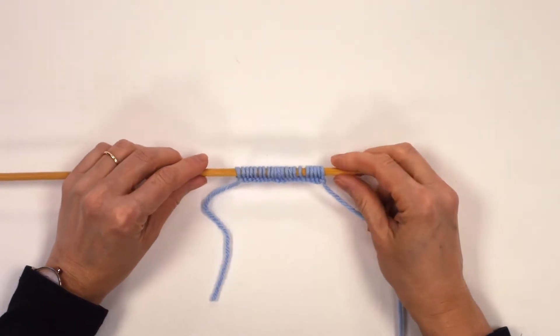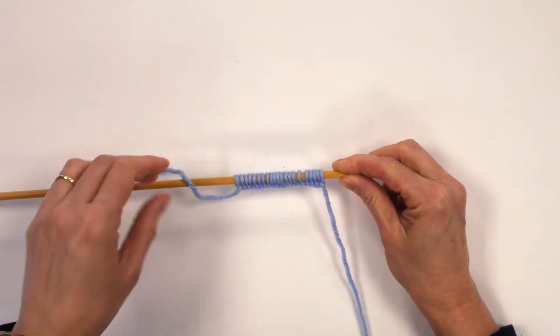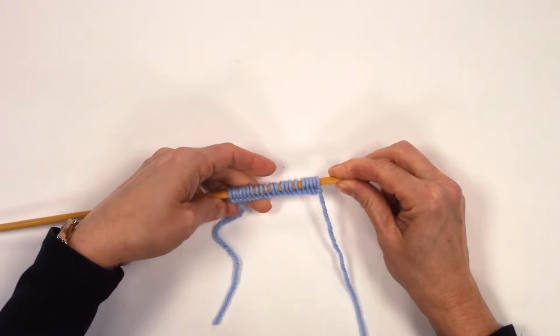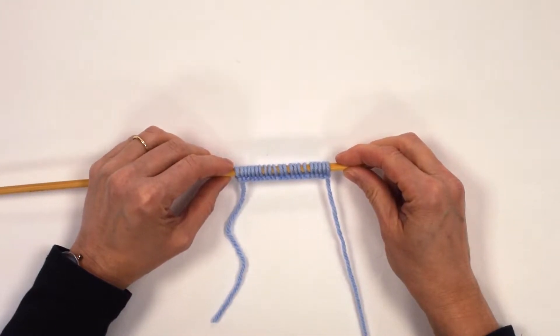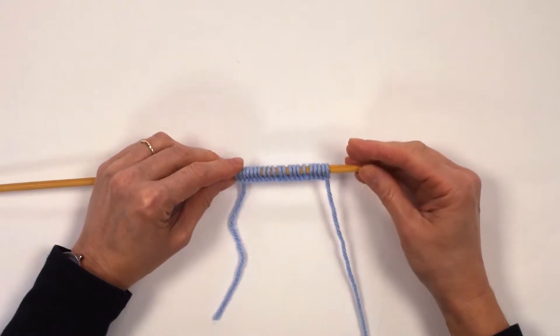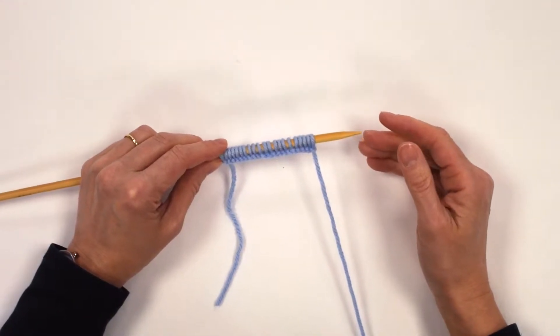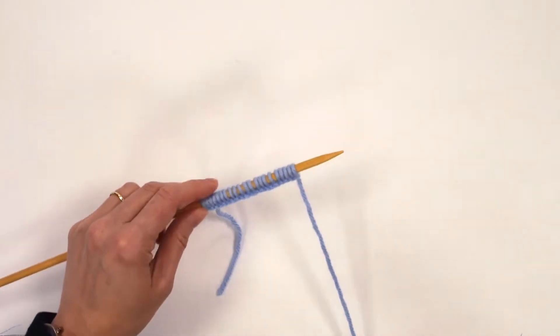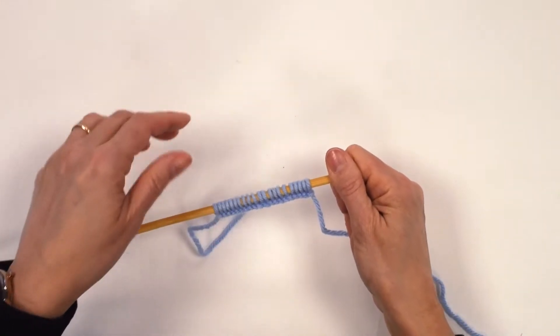Hi and welcome back to the Kinkle YouTube channel. Today we're going to look at initially the half fisherman's rib. There are various ways of doing the stitch that people call fisherman's rib. So this is the first one, which is the half fisherman's rib, and then later we're going to look at what I would class as the full fisherman's rib. Let's get started with this one and then hopefully you'll be able to see the difference.